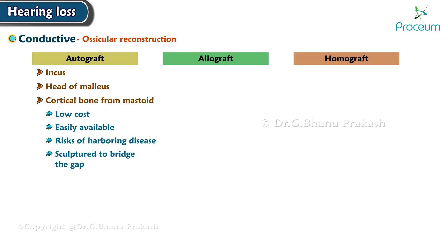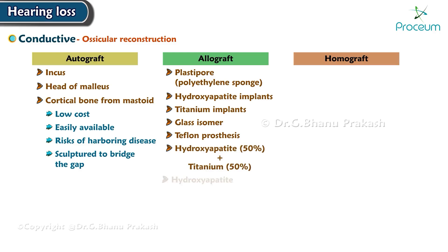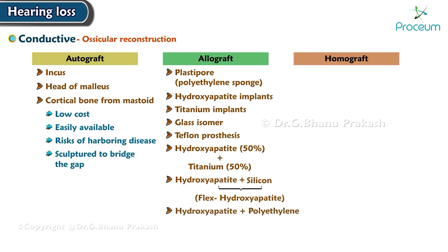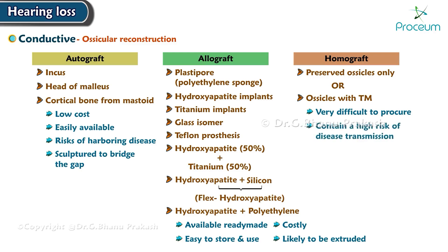Allograft materials include plastipore, polyethylene sponge, hydroxyapatite implants, titanium implants, glass ionomer, Teflon prosthesis, hydroxyapatite 50% plus titanium 50%, hydroxyapatite plus silicone flex, and hydroxyapatite plus polyethylene. They are available ready-made, easy to store and use, but costly and more likely to be extruded. Homografts consist of preserved ossicles only, or ossicles with the tympanic membrane. They are very difficult to procure and carry a high risk of disease transmission.